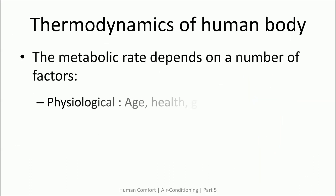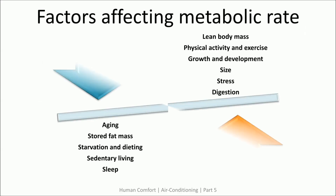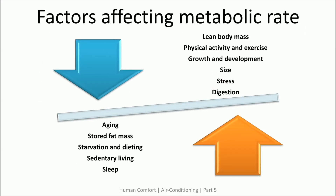The metabolic rate of a human body depends on physiological factors like age, health, gender, etc. It also depends on physical activity and environmental factors. Metabolic rate increases with physical activity and exercise. Better digestion also leads to a higher metabolic rate. A lean person has a higher metabolic rate compared to a person with larger fat storage. A growing child or young adult also has a higher metabolic rate compared to an older person. Metabolic rate drops during sleep.